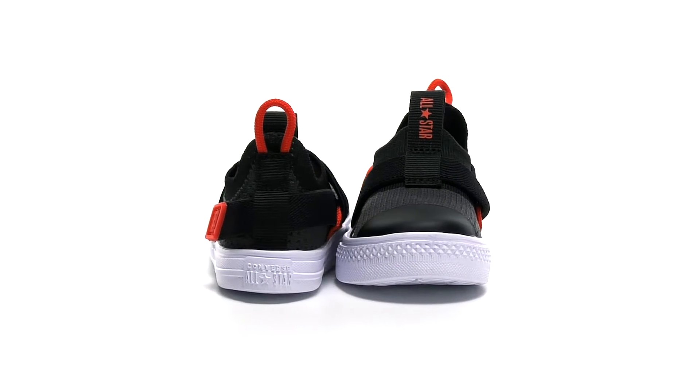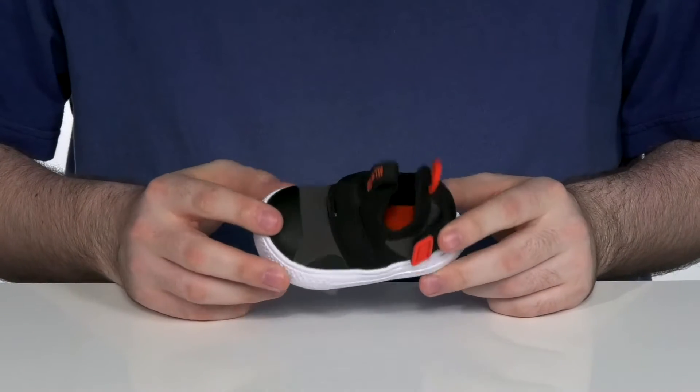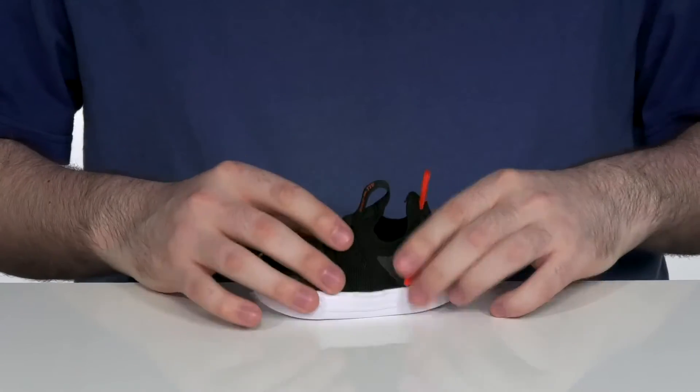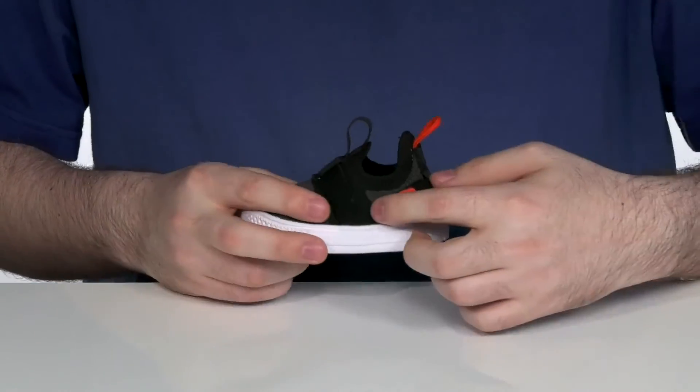Dress your little one up in classic Converse style with this great shoe. This little baby shoe is made with a synthetic and textile upper with lots of gore panels throughout to give it a nice form-fitting feel.